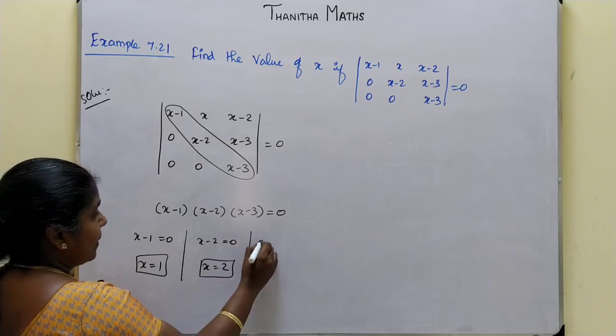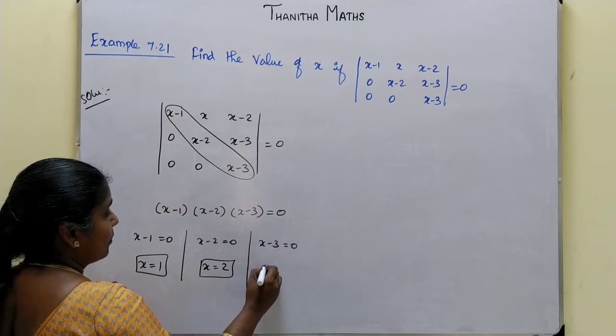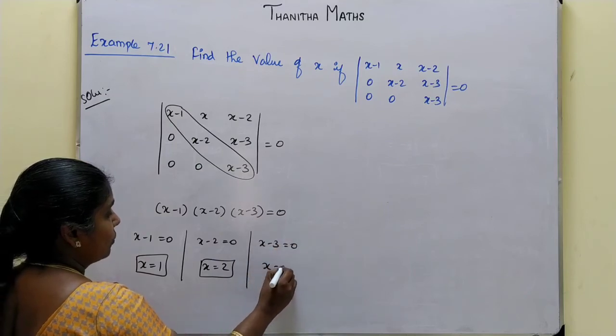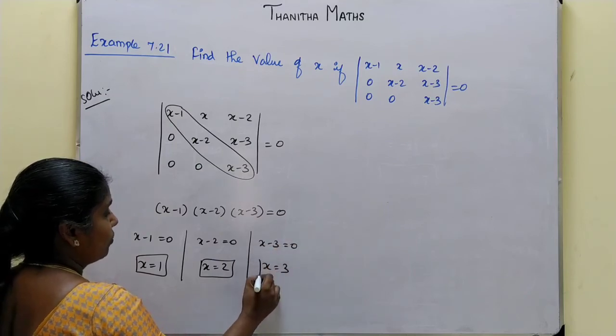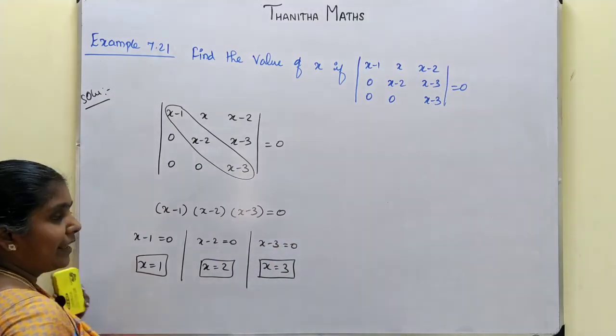Next, setting x-3 equal to 0, we get x is equal to 3. So the required answers are x equal to 1, x equal to 2, and x equal to 3.